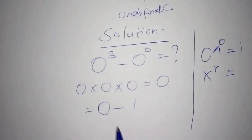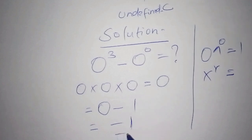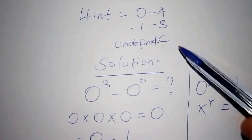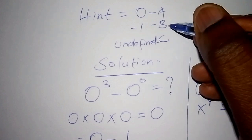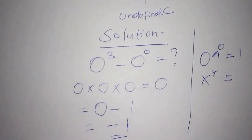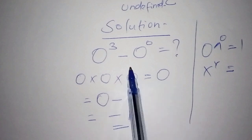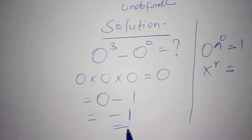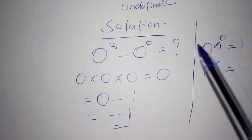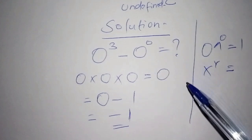So the full solution is 0 minus 1, which gives us negative 1 as the correct answer. According to the choices given, Choice B is correct. Choice A — 0 — is not correct, because 0³ minus 0⁰ is not 0. It is negative 1. Those who got 'undefined' are suggesting it is impossible to work out 0 to the power of 0.